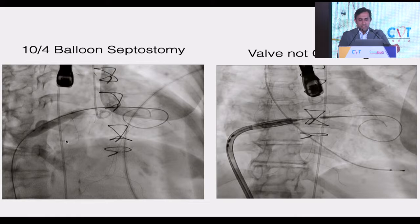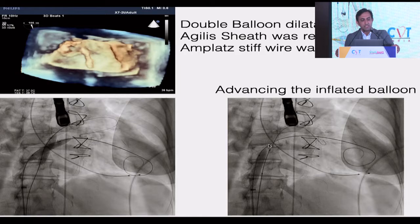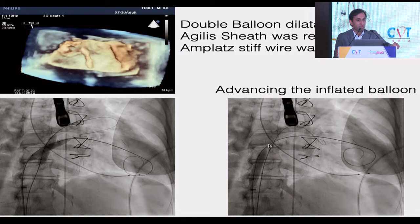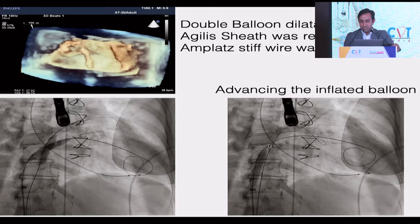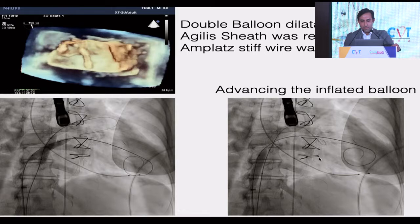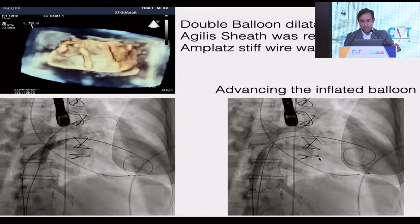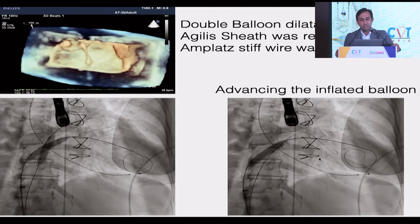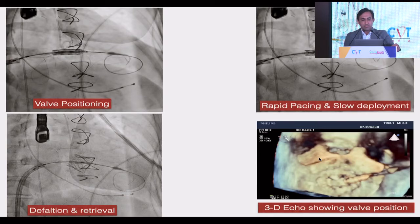The Sapien valve was not crossing. We looked at the surgical note — we were late in doing so. The approach for the mitral valve was a right atrial approach; when the surgeon closes the septum, sutures are placed or the septum can be thickened. We went back and did balloon dilatation of the septum with a bigger size and two balloons. We also performed flossing — advancing an inflated balloon across the septum into the valve — which tells you the trajectory the transcatheter valve will take.